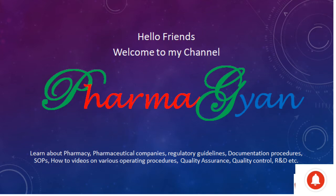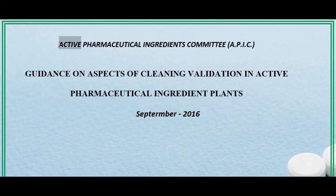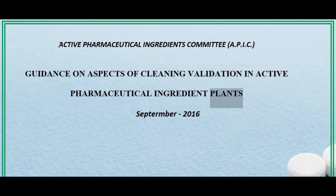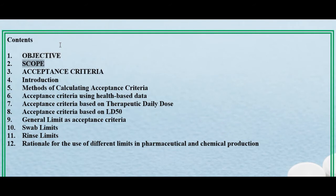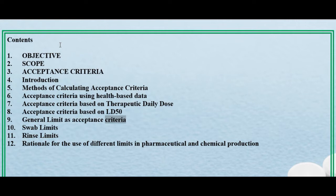Next we will discuss about the APIC guidance on aspects of cleaning validation in active pharmaceutical ingredient plants, September 2016. Contents covered include: objective, scope, acceptance criteria, introduction, methods of calculating acceptance criteria, acceptance criteria using health-based data, acceptance criteria based on therapeutic daily dose, acceptance criteria based on LD50, general limit as acceptance criteria, swab limits, rinse limits, and rationale for the use of different limits in pharmaceutical and chemical production.